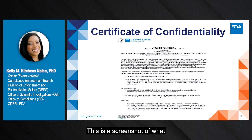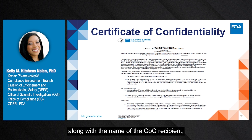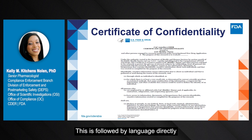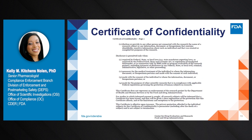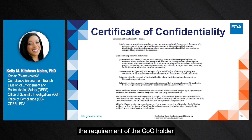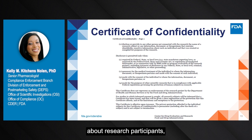This is a screenshot of what a certificate of confidentiality would look like. It includes a tracking number at the top, along with the name of the COC recipient, and a brief description of the study for whom the COC applies. This is followed by language directly from the statute defining identifiable, sensitive information and describing who the COC applies to. The COC will also reiterate the requirement of the COC holder to protect identifiable, sensitive information about research participants, as well as the exceptions to the disclosure protections.